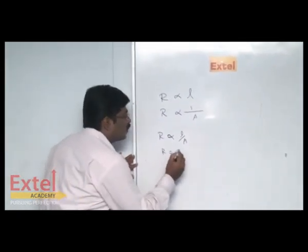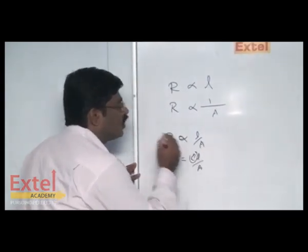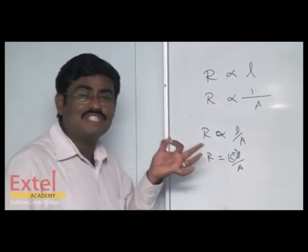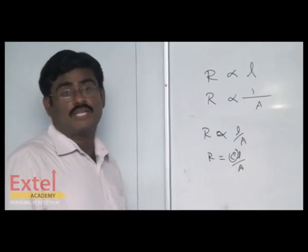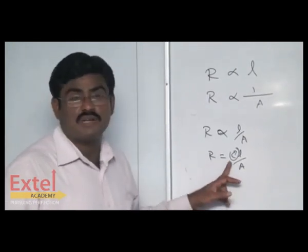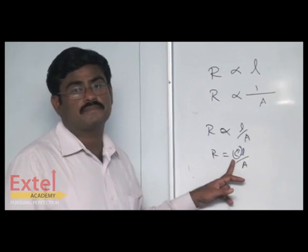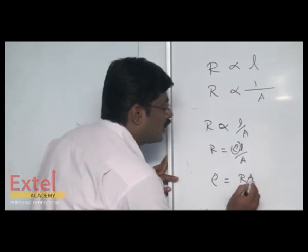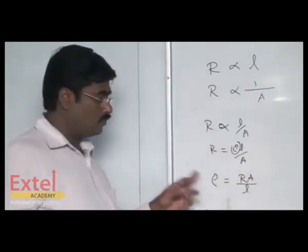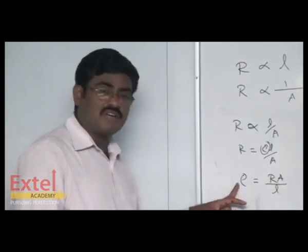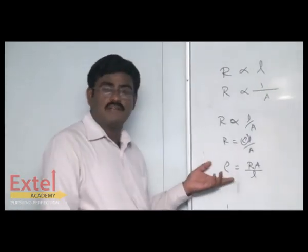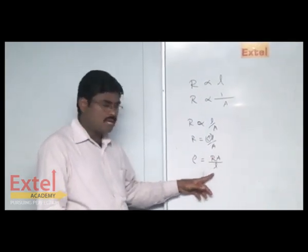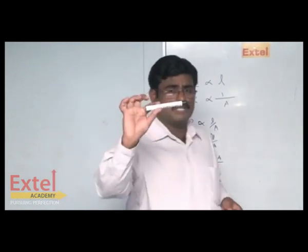To make it an equation, R equals rho times L divided by A. This rho is called the constant of proportionality, otherwise called the electrical resistivity of a conductor, and it is also called the specific resistance of a given conductor. So rho is equal to R times A divided by L. The specific resistance or electrical resistivity of a conductor can be expressed as rho equals R·A/L.